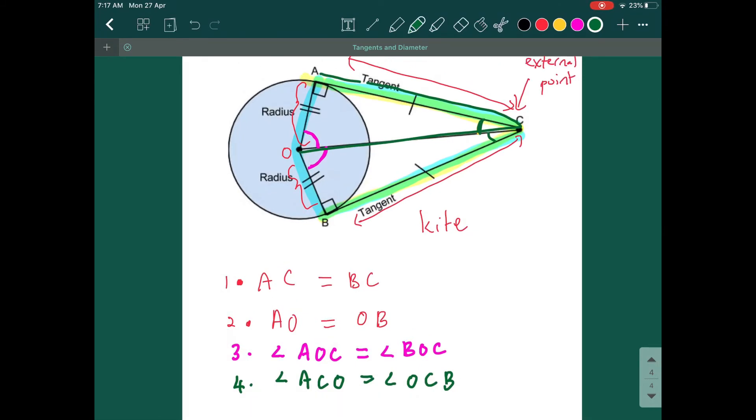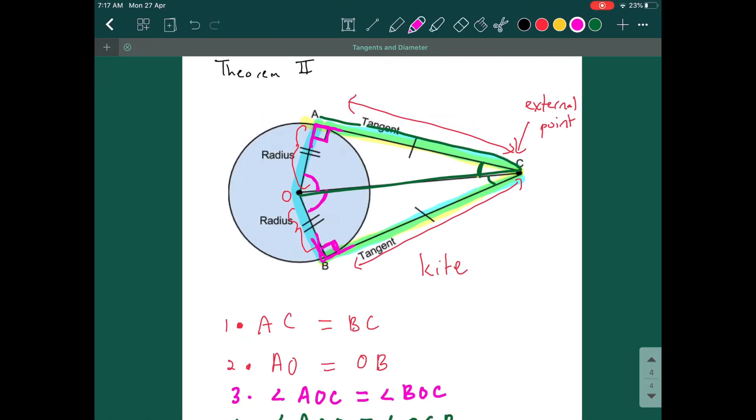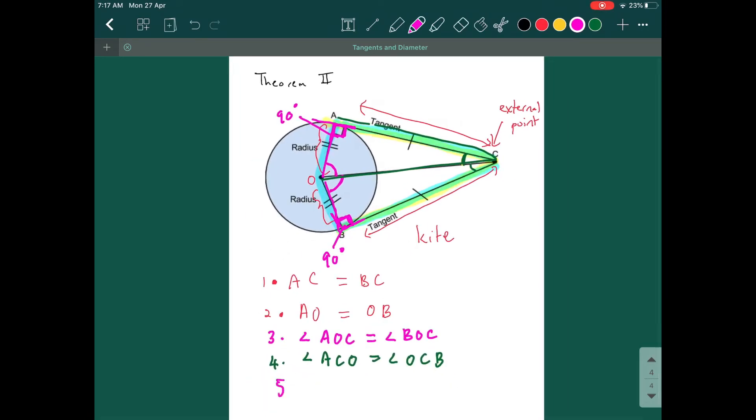And how about this one? Angle OAC and angle OAB, these two are going to be 90 degrees because of the theorem one we seen just now. Tangent touches the circle and we have radius, radius. It will make you to have 90 degrees here. Number five, angle OAC equals angle OBC equal to 90 degrees.